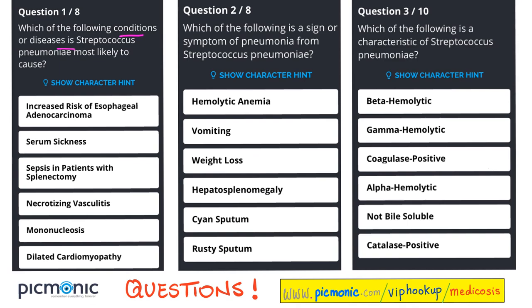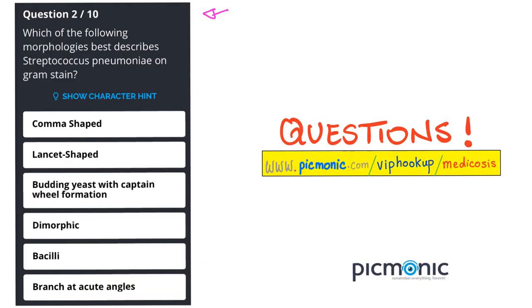Let's do some Picmonic questions. Which condition is Streptococcus pneumoniae most likely to cause? The answer is sepsis in patients with splenectomy. A sign of pneumonia from Strep pneumo? Rusty sputum — this is high yield. A characteristic of Strep pneumo? It's alpha-hemolytic. Bonus: Which morphology best describes Strep pneumoniae on gram stain? Lancet shape.